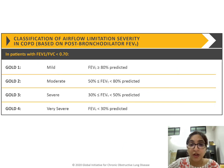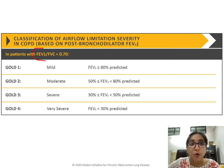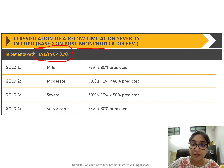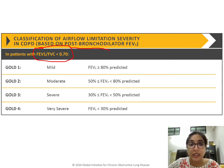This is an important table showing GOLD severity grading: GOLD 1, 2, 3, and 4. All these patients must have a post-bronchodilator FEV1/FVC ratio less than 70%. The severity is then classified by the FEV1 percent predicted: GOLD 1 (mild) is ≥80%, GOLD 2 (moderate) is 50–80%, GOLD 3 (severe) is 30–50%, and GOLD 4 (very severe) is less than 30%.